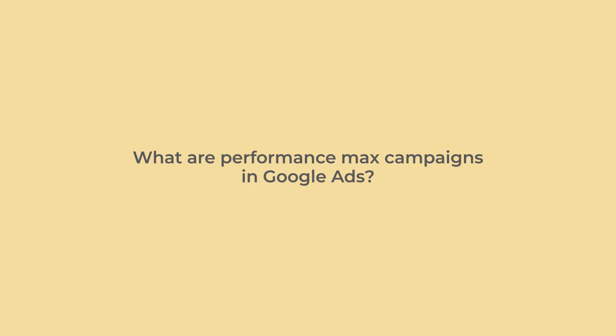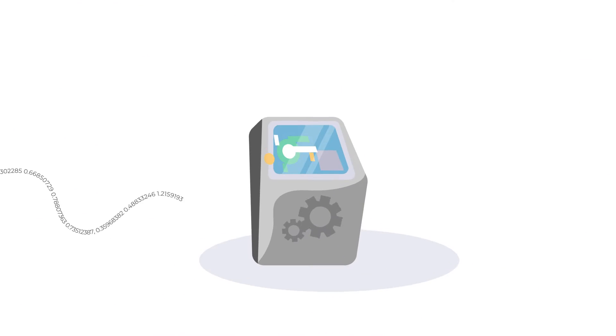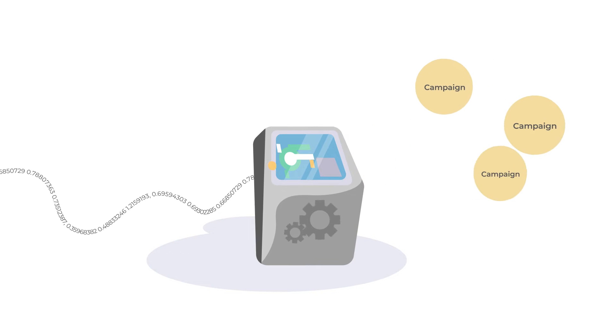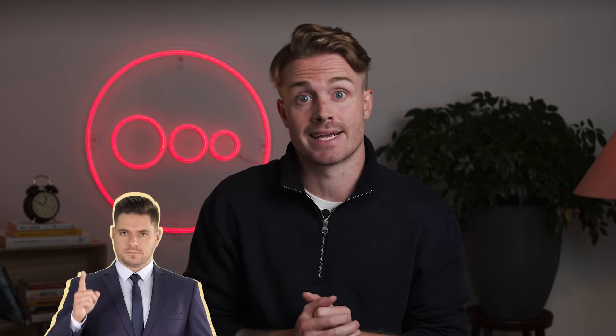What are performance max campaigns in Google Ads? Performance max campaigns are Google's newest campaign type and involve even more automation and machine learning than previous campaign types. This means less optimization powered by bid adjustments and campaign settings, and more optimization by feeding Google data and information. So if you don't have your data handy, better get to it — but more on that later.